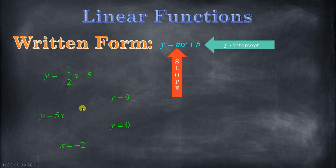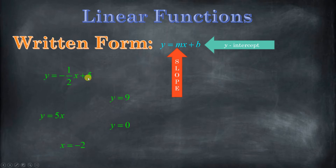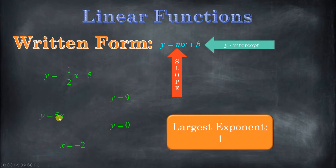Here are a couple of examples of some linear equations. Y equals a number, x equals a number — those are some special cases. This one has a slope of negative one half and a y-intercept of five. This one has a y-intercept of zero and a slope of five. But in all cases for linear equations, the largest exponent is a one.